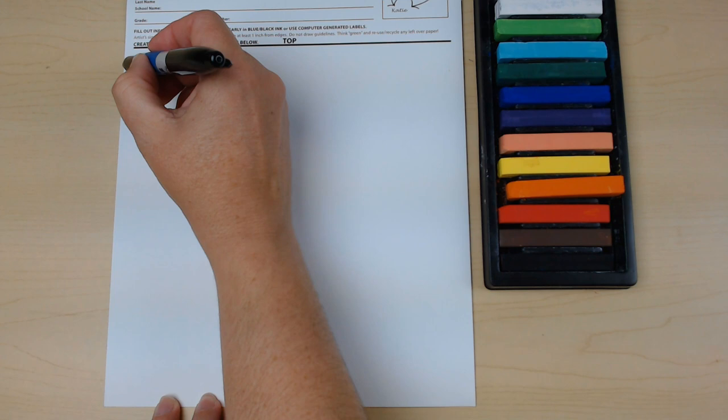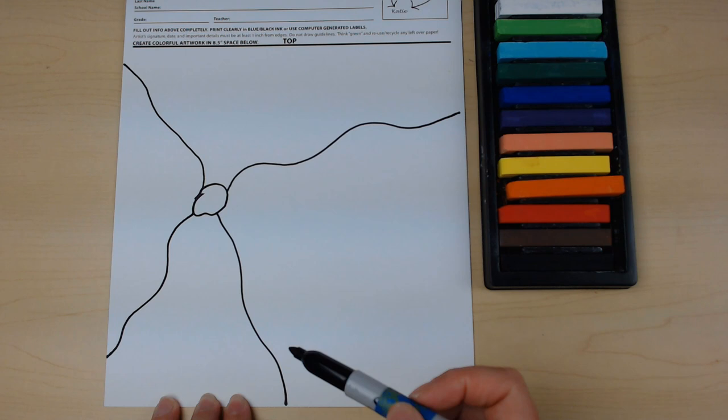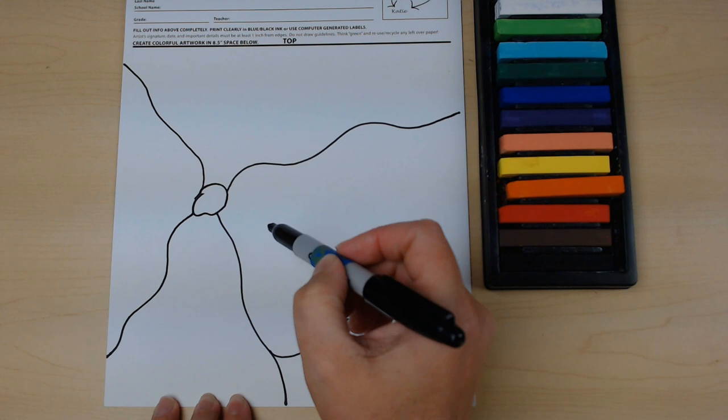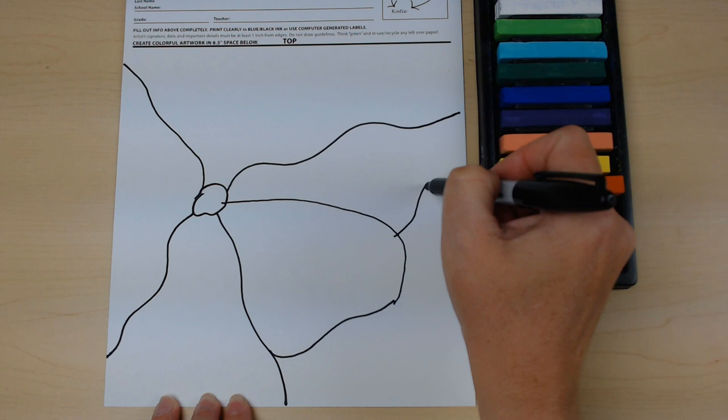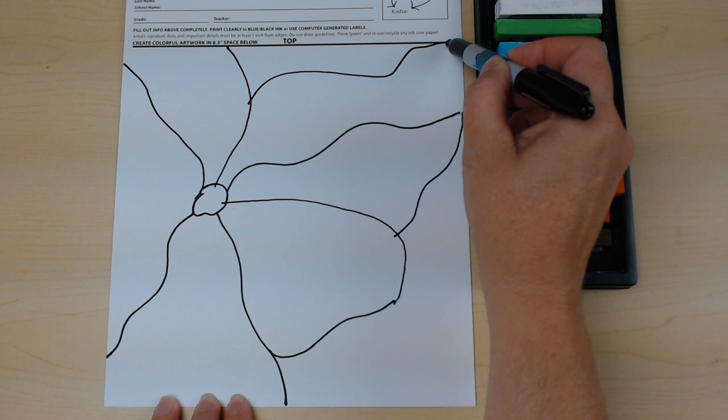I'm going to draw my petals going all the way off the edge of paper. And I'm going to keep my lines nice and natural and curvy looking. And I'm just going to keep drawing my petals here, making sure that they're going off the edge of the page. And I'm going to treat that line at the top like it is the end of the page.